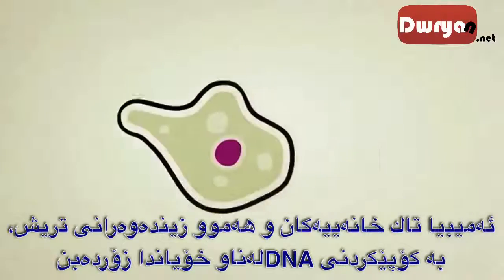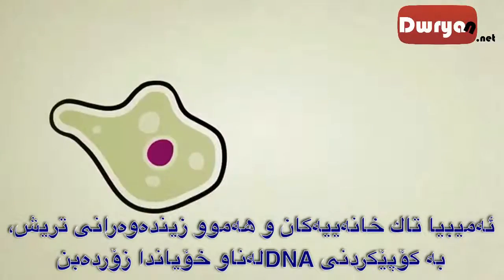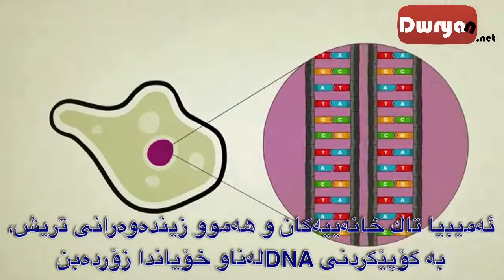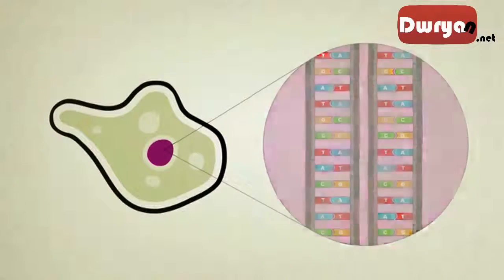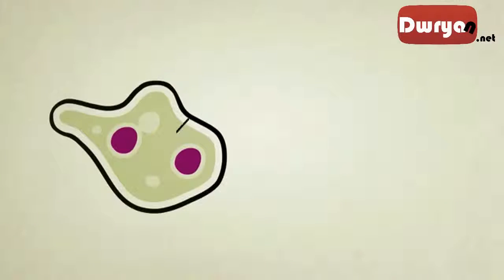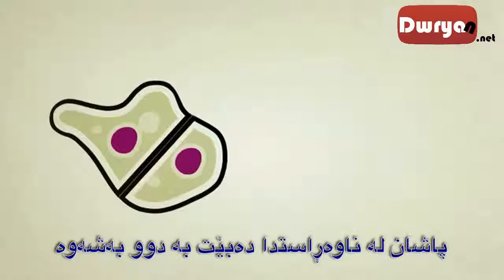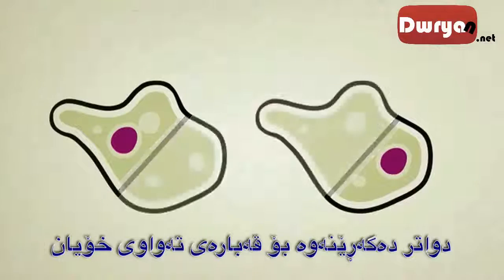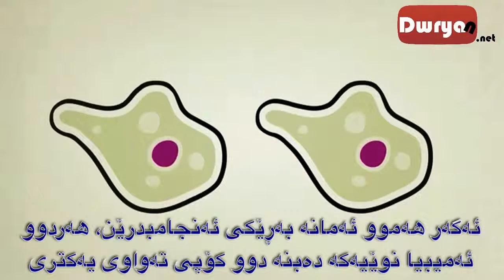Single-celled amoebas and other simple creatures reproduce by copying their DNA inside their guts, moving both copies to either side of their body, splitting in two right down the middle, and then growing back to full size. If all goes well, the two new amoebas will be exact copies of each other.